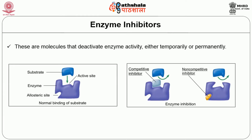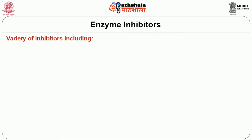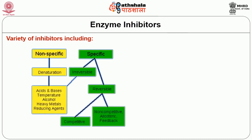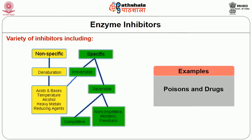Enzyme inhibitors are molecules that deactivate enzyme activity, either temporarily or permanently. They can be classified as specific inhibitors or non-specific inhibitors. Under specific inhibitors, we have reversible inhibitors and irreversible inhibitors. Under reversible inhibitors, we have competitive inhibitors and non-competitive inhibitors. Another form is uncompetitive inhibition. Non-specific inhibitors include agents that generally cause denaturation of enzymes, such as changes in pH, temperature, presence of alcohol, heavy metals, reducing agents, poisons, and drugs.